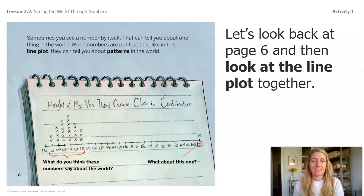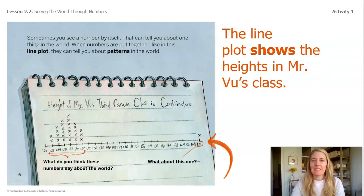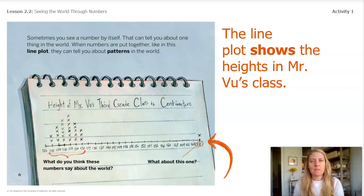When numbers are put together like this in a line plot, they can tell you about patterns in the world. The line plot here is organized in a way that helps me visualize the heights of people in this class.